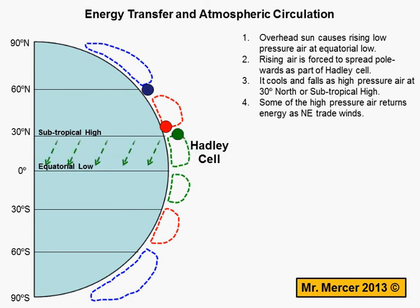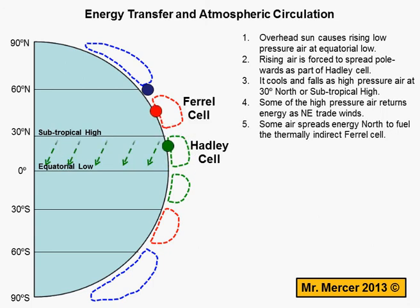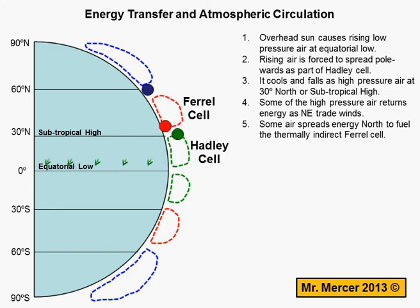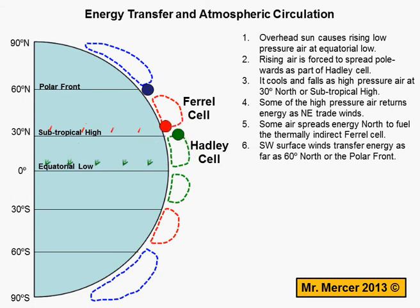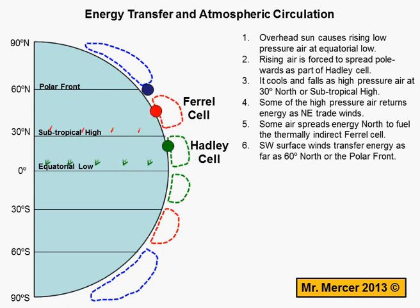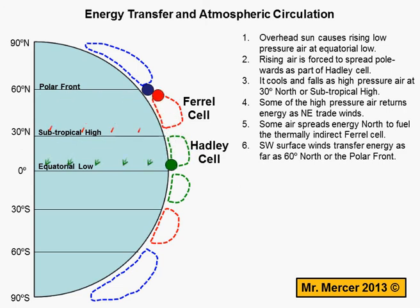Some of the air at the subtropical high spreads north to fuel the thermally indirect Ferrel cell, which you can see operating now. It's called thermally indirect because it's not powered by the sun in the way that the Hadley cell is — it's powered by the other two cells on either side of it. It has its own set of winds which blow towards the northeast, and of course that means we refer to them as southwesterly winds. Those winds transfer energy from 30 degrees north to 60 degrees north, otherwise known as the polar front, which you can see has appeared on the diagram.